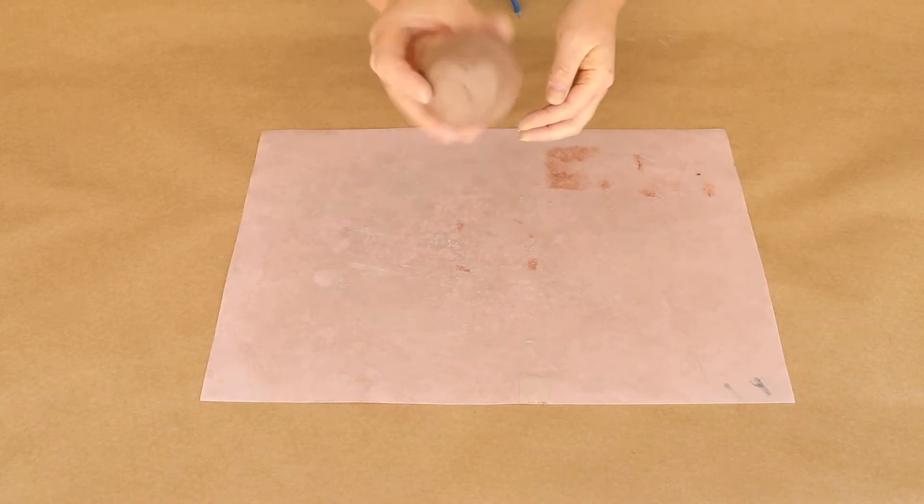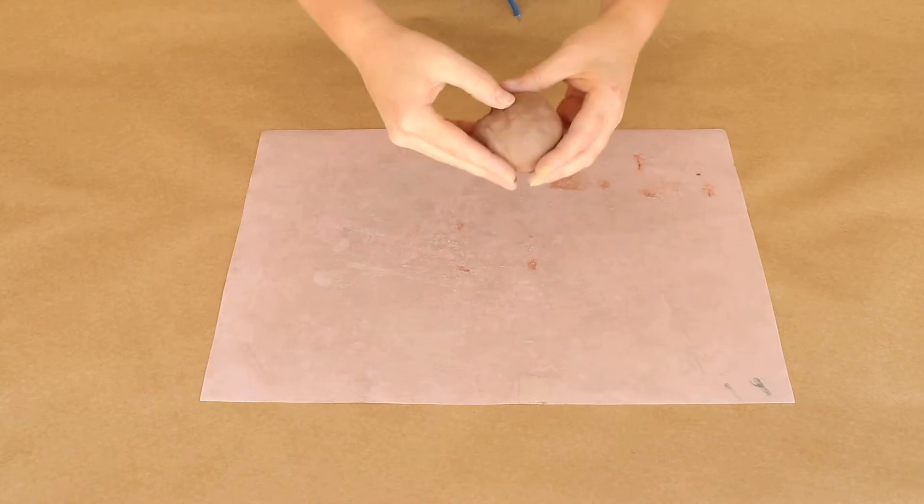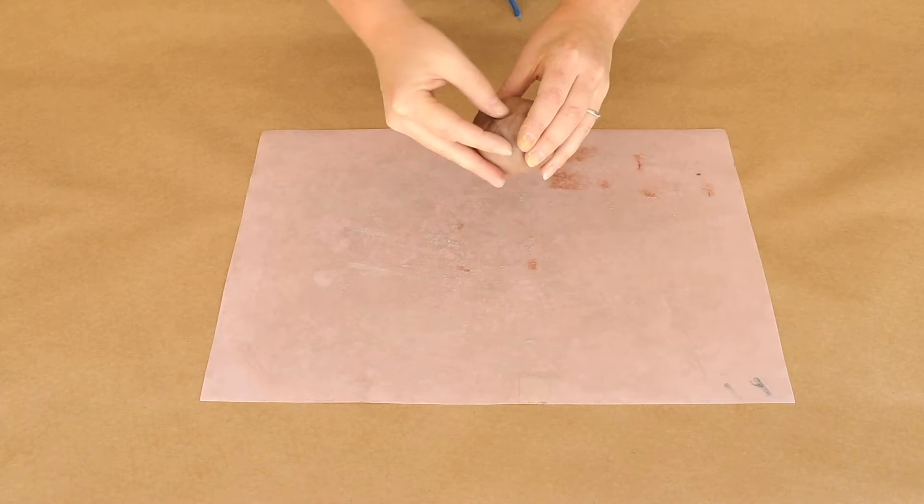Once it's in a ball, then you want to take all these little creases out. Just smooth those with your thumb all around the ball. Just packing it.